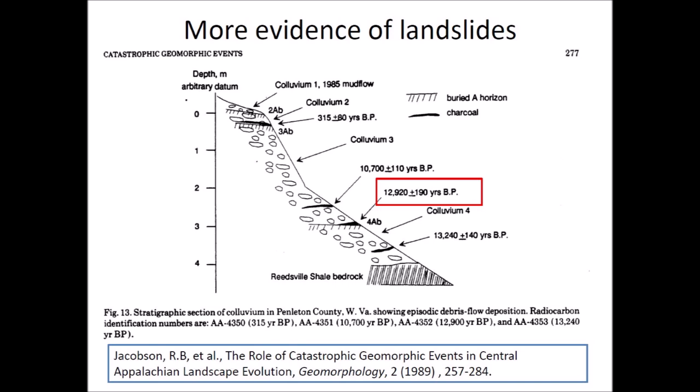The ice boulders that hit solid ground disintegrated explosively with energies equivalent to 13 kilotons to 3 megatons of TNT — equivalent to earthquakes of magnitude 6.0 to 7.54. Jacobson et al. described a landslide in Pendleton County, West Virginia, at 12,920 years before the present, corresponding to the time of the Younger Dryas onset. These landslides are circumstantial evidence of the extraterrestrial impact, but represent the type of effect expected from a hailstorm of massive ice boulders.